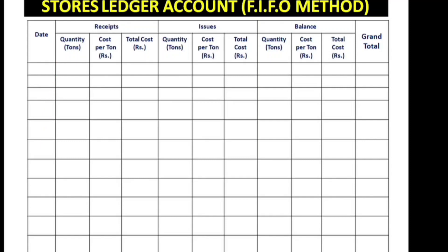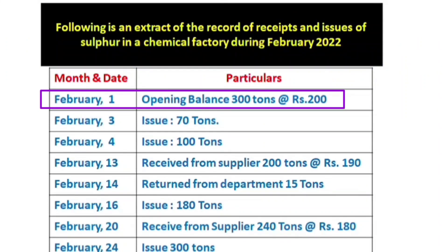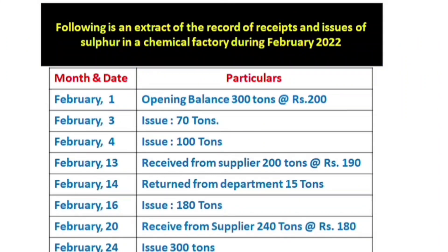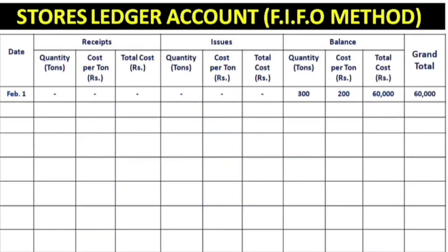We know the problem. The opening balance is 300 tons each 200 rupees. We will enter this opening balance. In the balance column, we have 300 tons at 200 rupees each, giving a total of 60,000.